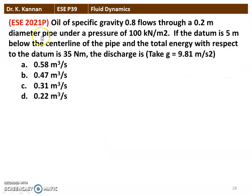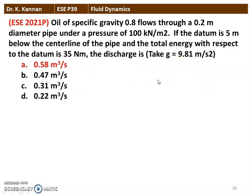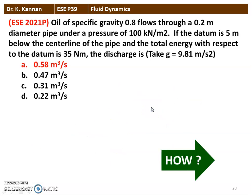The next question is from the 2021 question paper. Oil of specific gravity 0.8 flows through a 0.2 meter diameter pipe under a pressure of 100 kilonewtons per meter square. If the datum is 5 meters below the centerline of the pipe and the total energy with respect to the datum is 35 Newton meters, calculate the discharge. The correct answer is 0.58 meter cube per second.